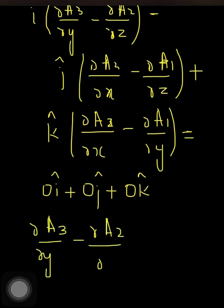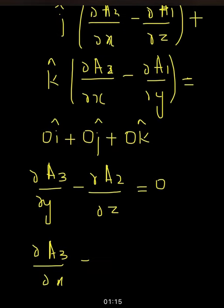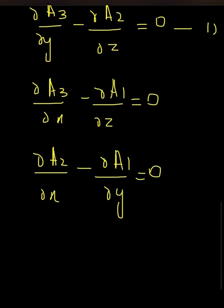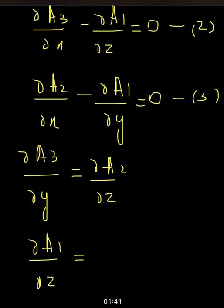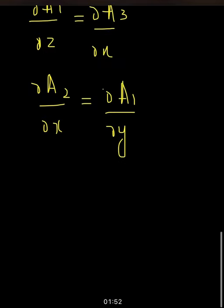Comparing both sides, I get: partial a3 over partial y minus partial a2 over partial z equals zero; partial a3 over partial x minus partial a1 over partial z equals zero; and partial a2 over partial x minus partial a1 over partial y equals zero. From these three equations: partial a3/∂y = partial a2/∂z, partial a1/∂z = partial a3/∂x, and partial a2/∂x = partial a1/∂y. This is the first condition, used in the next step.